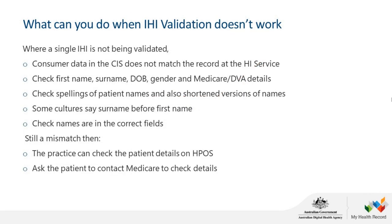What happens when the IHI won't validate? Sometimes this can also affect Medicare billing ability. Consumer data in the clinical information system may not match the record at the HI service. You should always check the first name, surname, date of birth, gender, and Medicare or DVA details. Also check spellings and shortened versions of names — for example, Ben instead of Benjamin, Bill instead of William, or Liz instead of Elizabeth. Some cultures also have their name translated into English which doesn't match Medicare records, or have their surname before their given name — this is why it's important to view the Medicare card when checking patients in. If all this has been confirmed and it still won't validate, check with the practice manager to verify the patient details in HPOS. If the problem is still not resolved, the patient will need to check with Medicare.